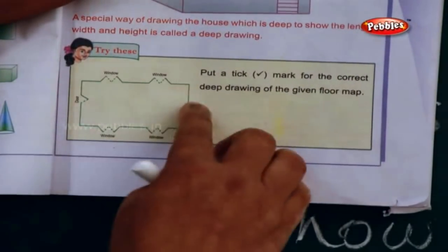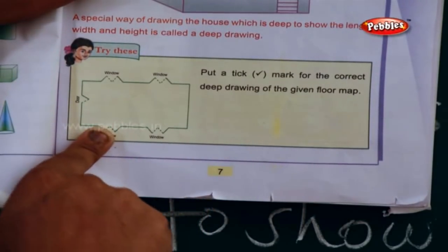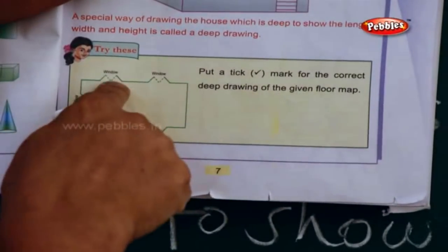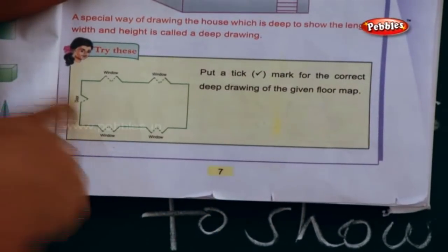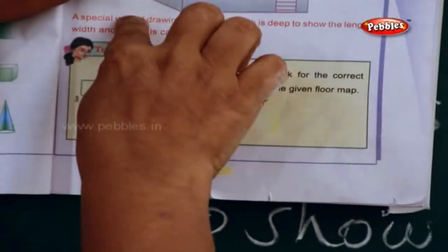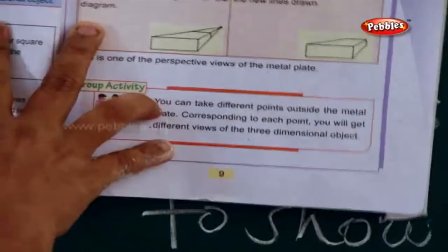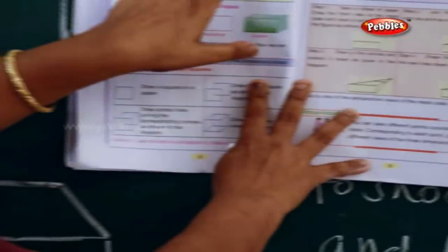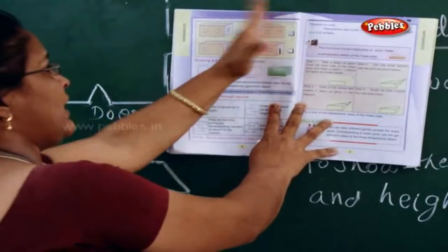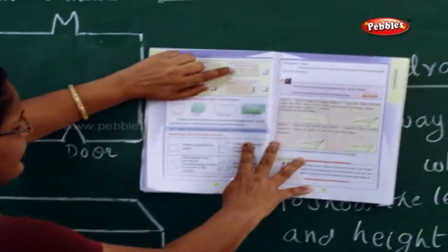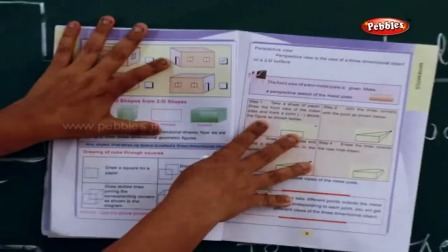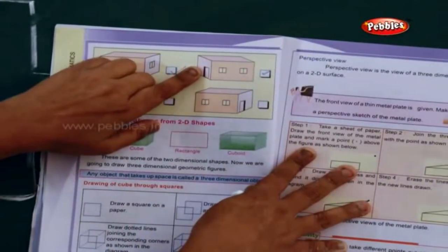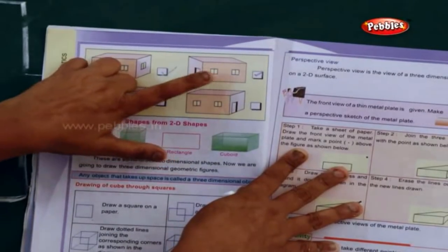Try this - there is a floor map given. You have to see this floor map and put a correct mark for the deep drawing of the given floor map. On the top there are two windows, at the bottom there are two windows, and the left hand side is a door. So this figure is the correct answer because the door is on the left hand side and two windows at the bottom.